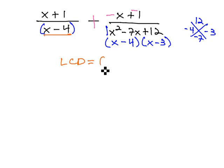In the LCD, then, we see we have an x minus 4. We don't need to list it twice, and an x minus 3. Multiplying by missing factors, then, we see the first fraction already has the x minus 4. It's missing the x minus 3 in the numerator and denominator.